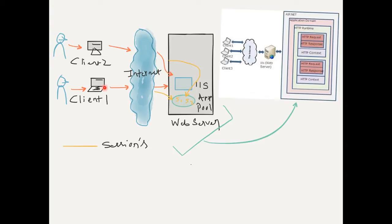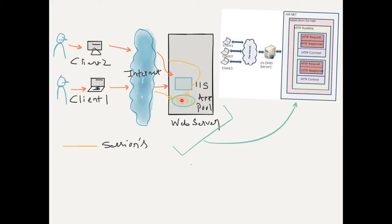Client one and client two make a request. Whenever client one makes a request — say he logs into gmail.com — he sets up a session and stores session variables like the username, credentials, the host machine he logged in from, or the country name. What we store in state is held in a particular memory called an application pool, which is specifically reserved for applications running on that particular web server. The yellow lines show how sessions get stored.